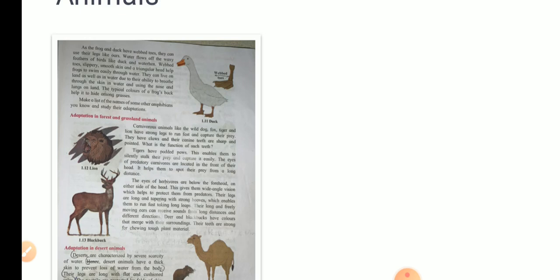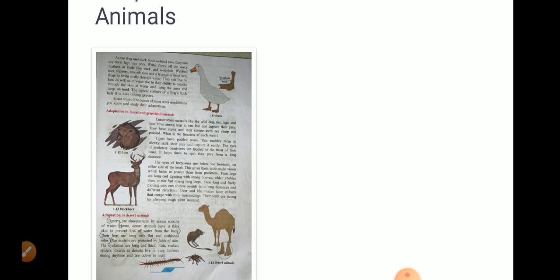The eyes of the predatory carnivores are located in the front of the head. This helps them to spot their prey from a long distance.